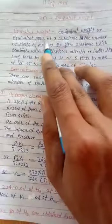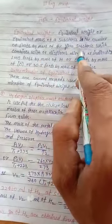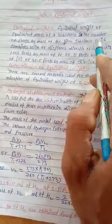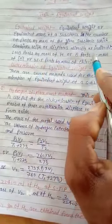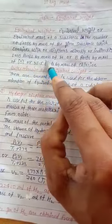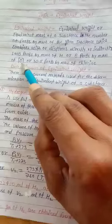What is equivalent weight? Equivalent weight or equivalent mass of a substance is the number of parts by mass of the given substance which combines with or displaces directly or indirectly 1.008 parts by mass of hydrogen or 8 parts by mass of oxygen.